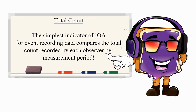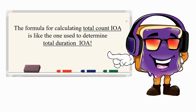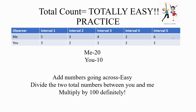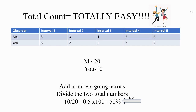Total count IOA is the simplest indicator of IOA for event recording data. It compares the total count recorded by each observer per measurement period. Add numbers across each observer's totals, divide the two total numbers, then multiply by 100.